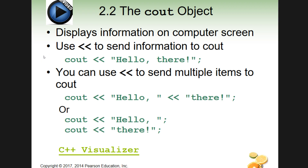Here we go with the cout statement. We have 'cout' and then the stream insertion operator — that's two less-than signs next to each other with no space. I look at those as little mini bullhorns: cout is shouting out, and what follows is what gets shouted. That's just how I see it — if it helps you, great; if not, forget I said that.